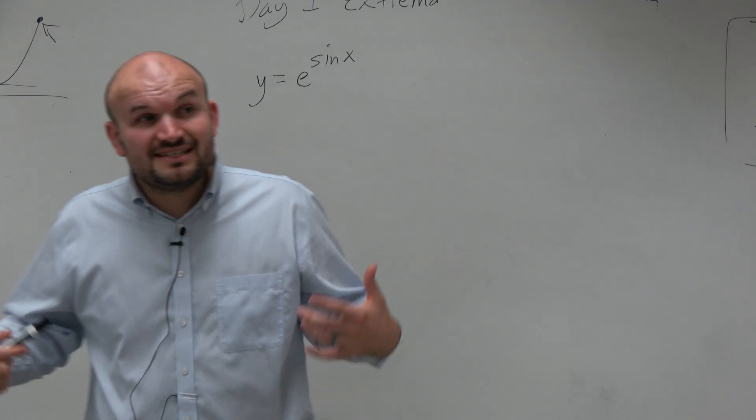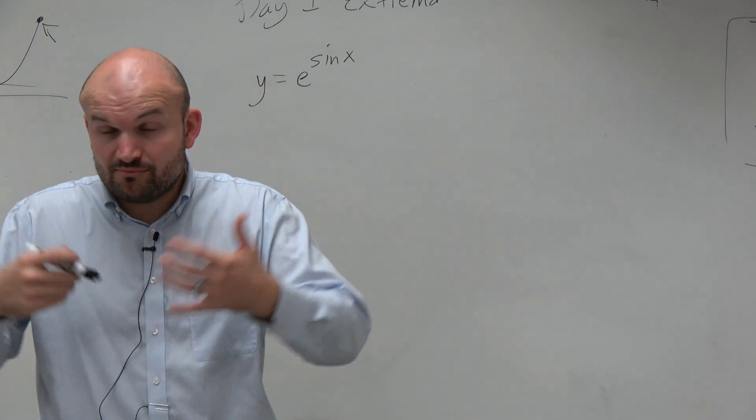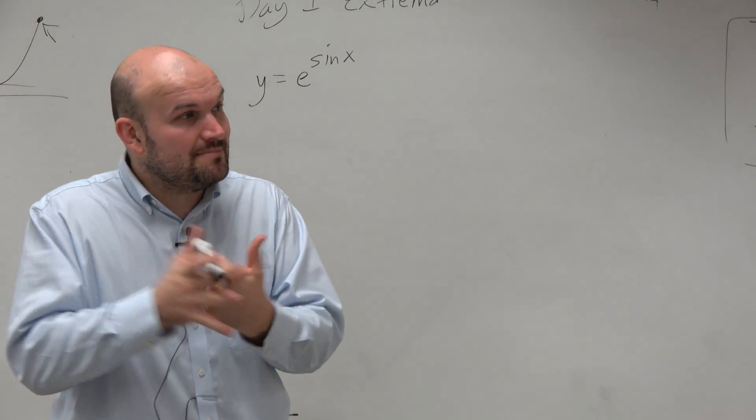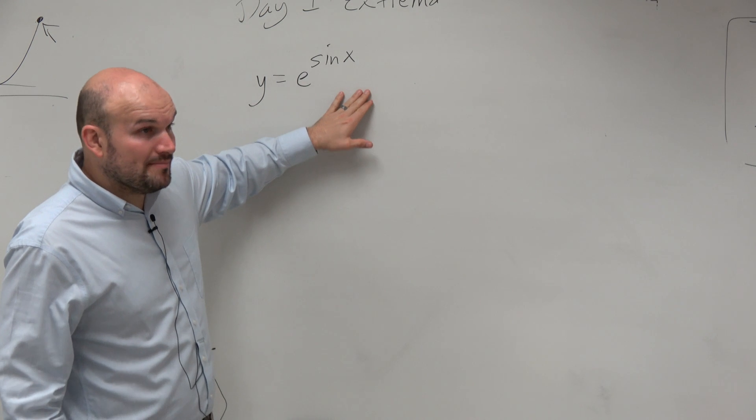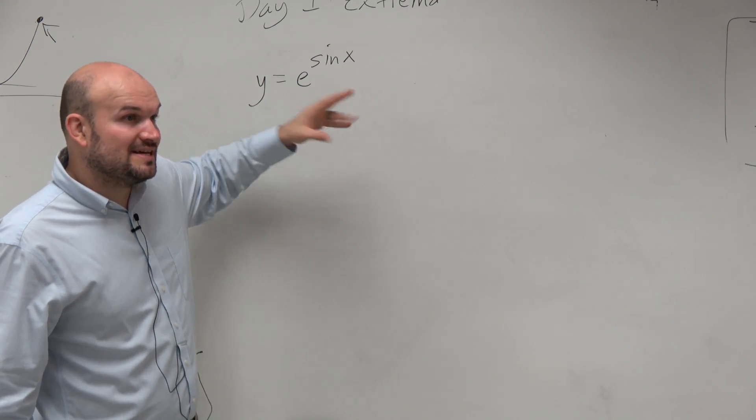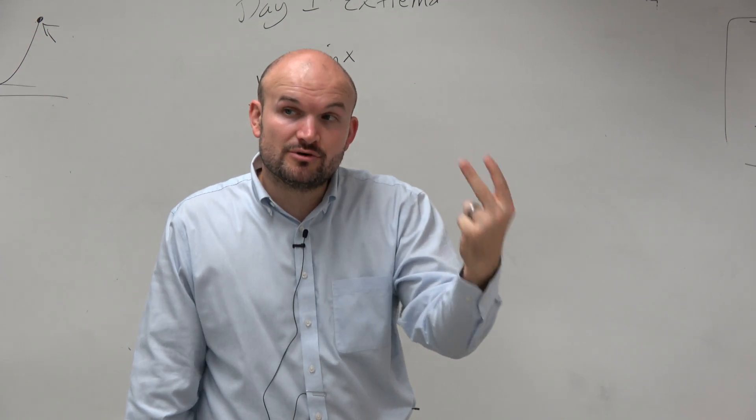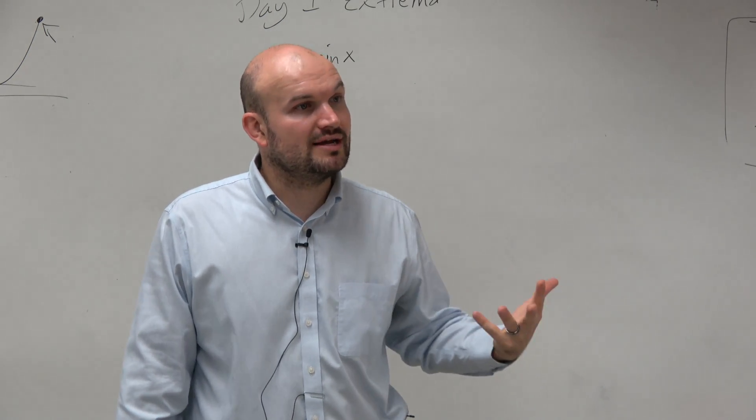If we need to identify this function and prove that it has a maximum or a minimum, then we have to have our two constraints. For the EVT to apply, we have to have our two constraints.